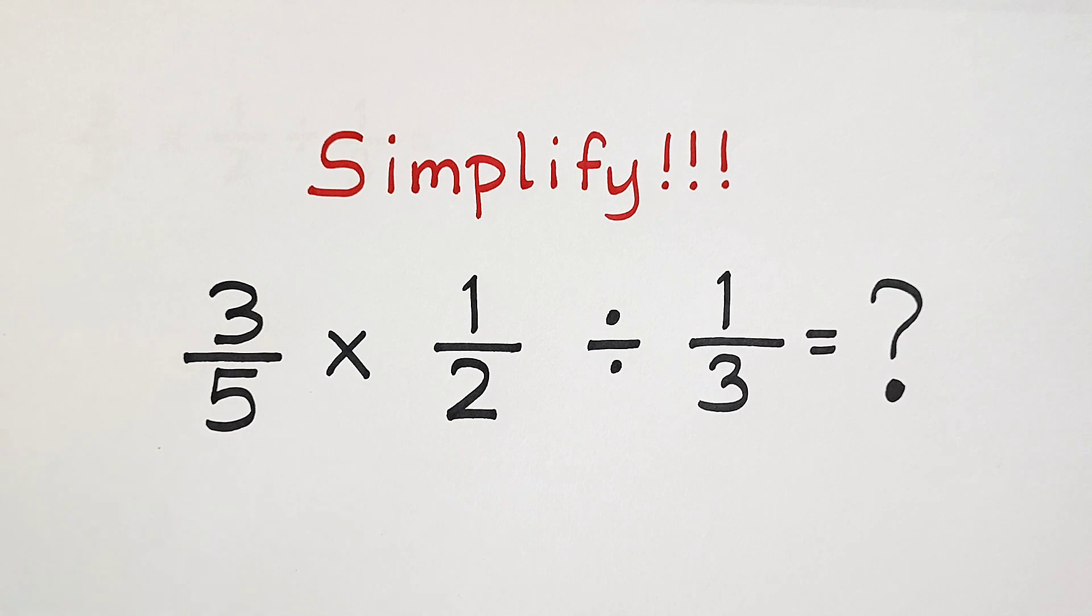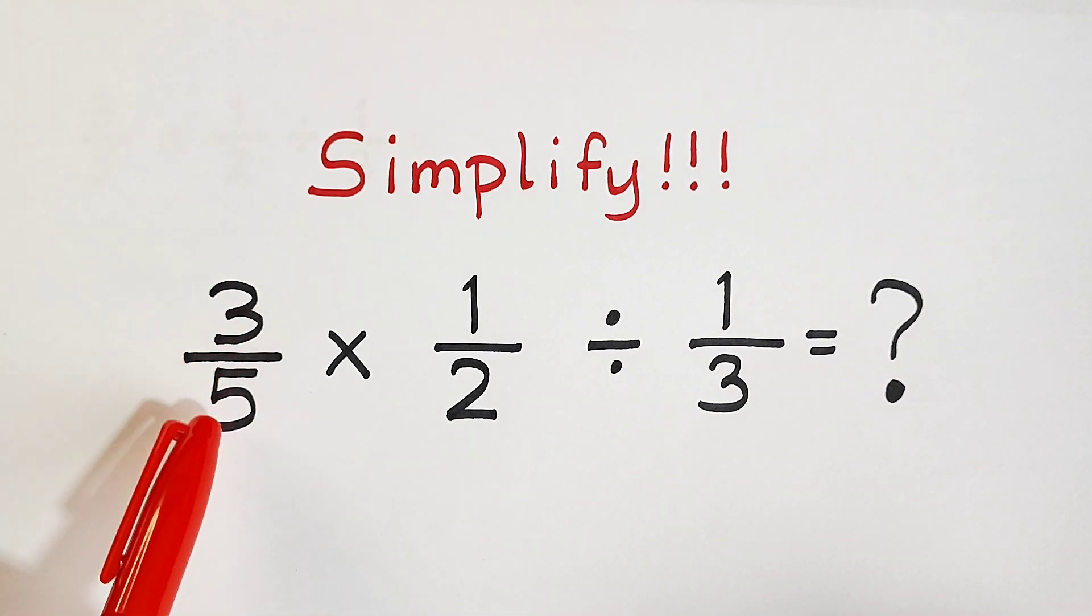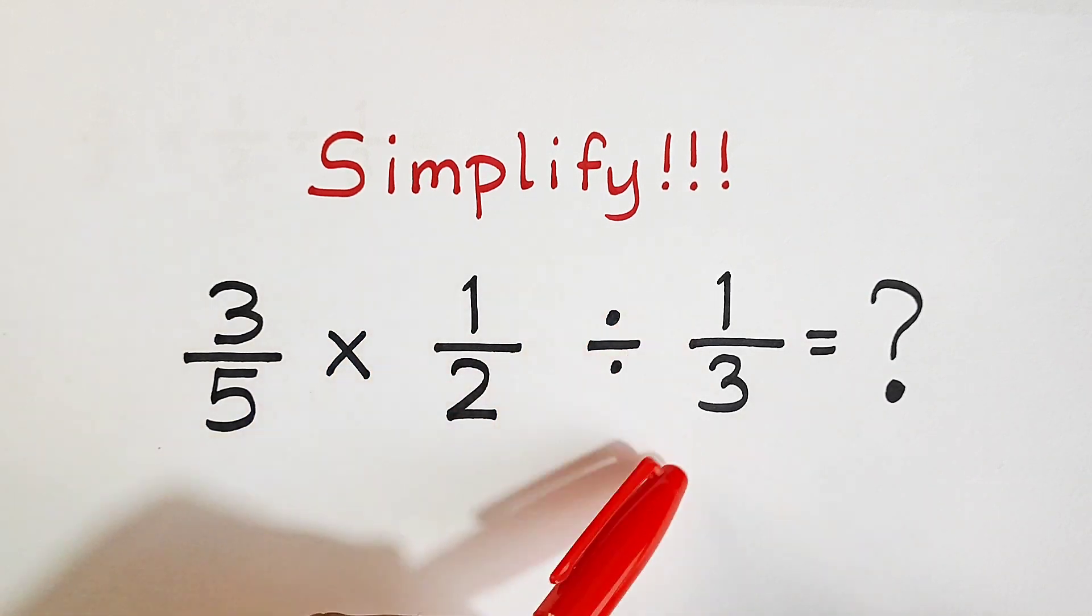Hi guys, it's me, teacher Goen. In today's video, we will simplify this expression: 3 over 5 times one-half divided by one-third.